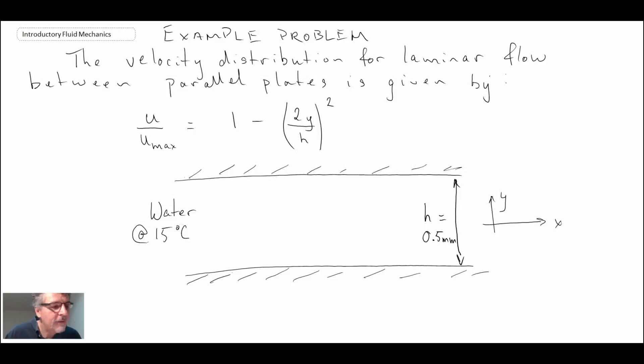We have water flowing, and looking at this profile defined by the equation, this is a parabolic profile. This flow we call plain Poiseuille flow. We get something that looks like that, and here at the center line we would have u_max, which appears in the equation. u_max equals 0.30 meters per second. What we're trying to find is the shear stress on the upper plate and the direction of the shear stress.